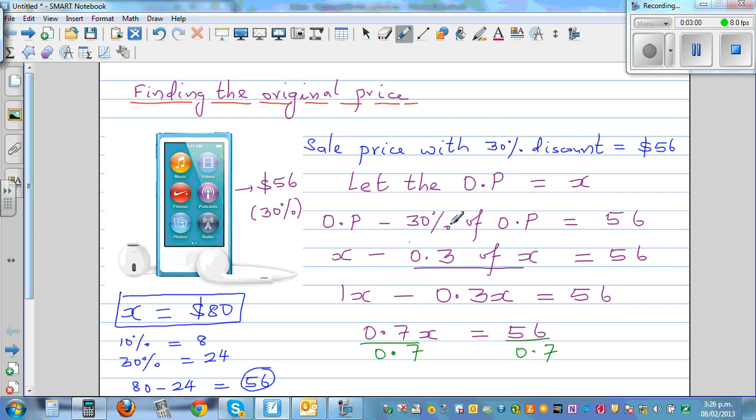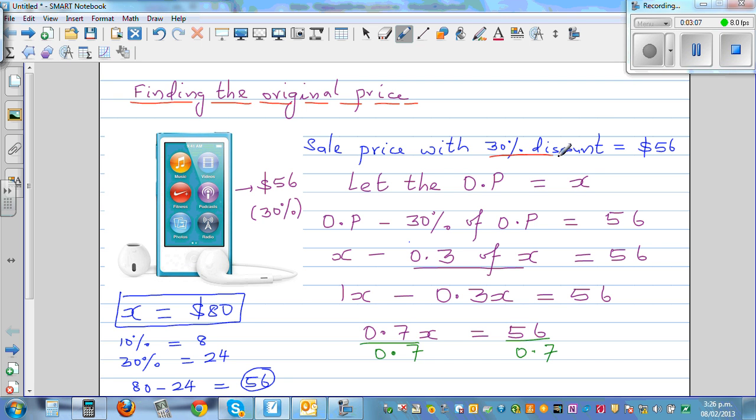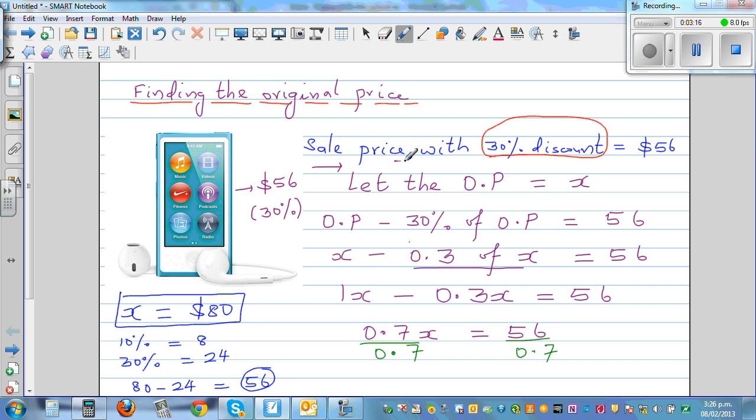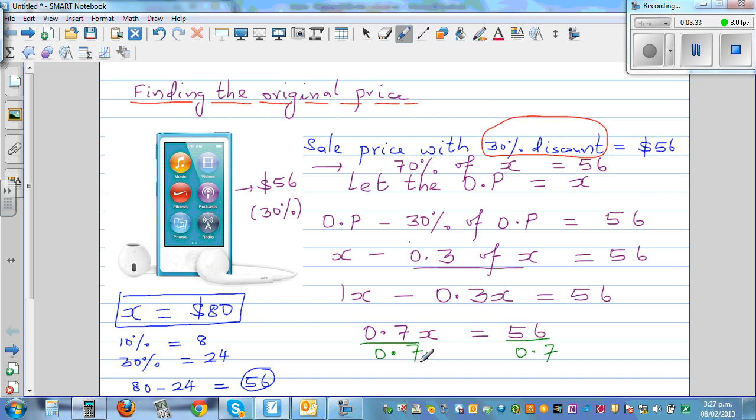Let's think in a different way. When there's a discount of 30%, how much are you paying? This whole thing can be written as 70% of the original price. 70% of X equals 56, which is 0.7 times X equals 56. This is a more direct way of doing it.